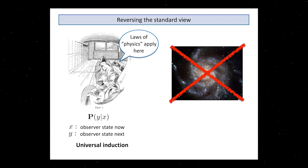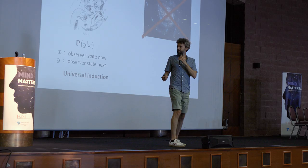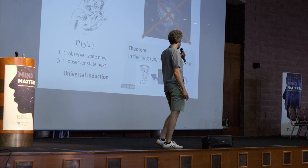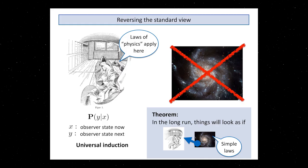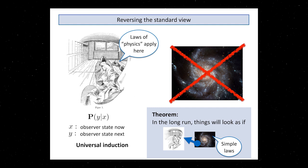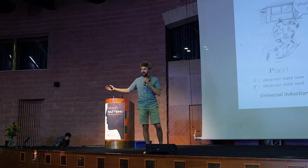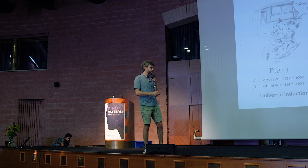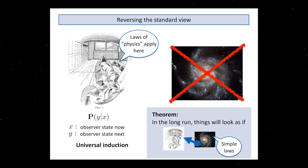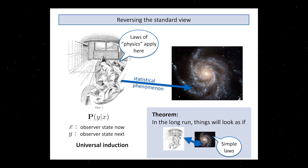But as I will try to convince you, we will see that somehow as a theorem, as a consequence of this approach, you will see that in the long run for observers, it will just look as if there was some sort of external world around with simple laws that seems to determine what they see. So in a way, it's a reversal of the view, and it contains something like a world as a statistical phenomenon.